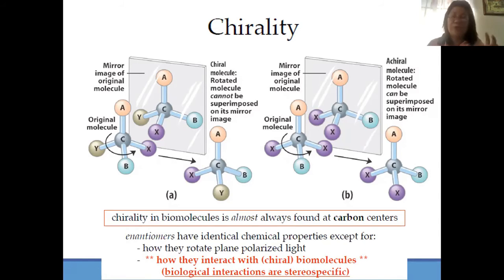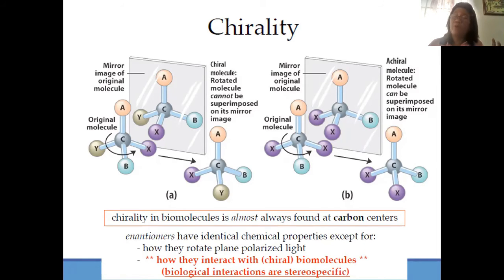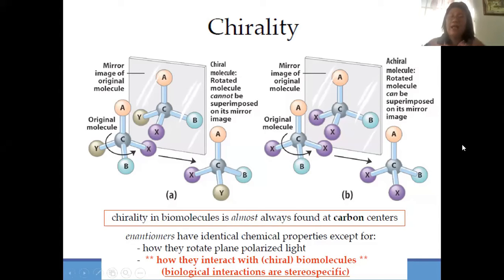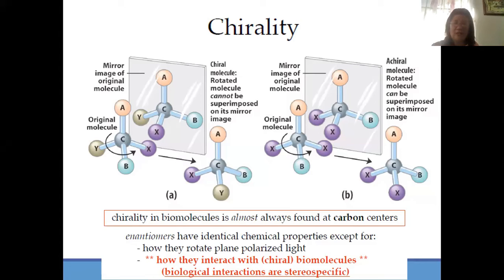A chiral molecule, if you rotate it, could not superimpose on its mirror image. Chiral carbon has four different components or different substituents. While achiral — there are two that are the same. That is why it is called chiral versus achiral molecule.